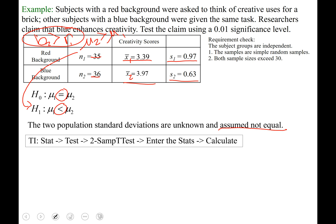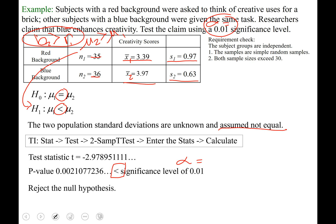On your output screen, you have t equals, that is called your test statistic. You have p equals, that is called your p value. Our test statistic is negative 2.9789 and so on. Our p value is 0.0021077236 and so on. I am using the p value method here, in that I'm comparing p to my significance level α, which was given to me as 0.01. And it turns out that p is low.